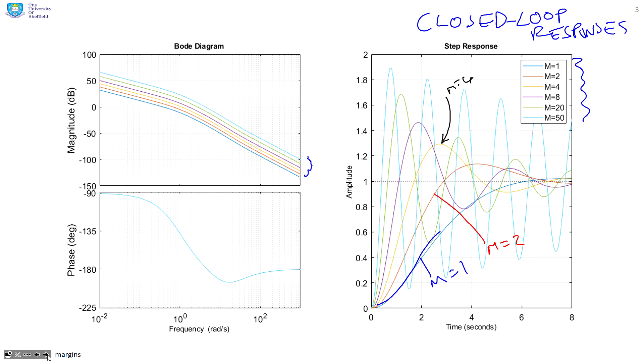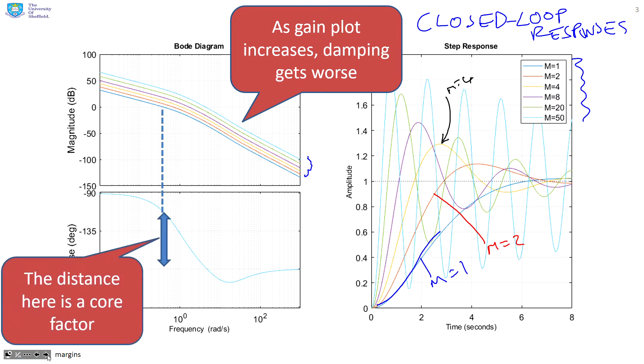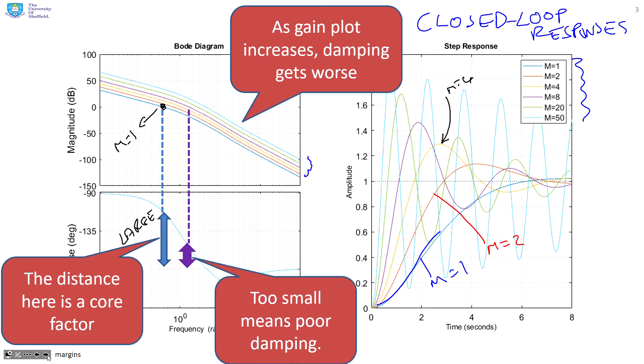Let's look at the Bode diagram. As the gain gets bigger, the damping's getting worse. But how can I see that from the gain plot? These are the key values. You'll see that distance I've just marked with the double arrow. This comes from the blue gain plot, which corresponds to m equals 1, and this double-sided arrow is large. Now, the purple line is very underdamped, and the corresponding double-sided arrow is small. Because it's small, it means we've got low damping and poor behavior.